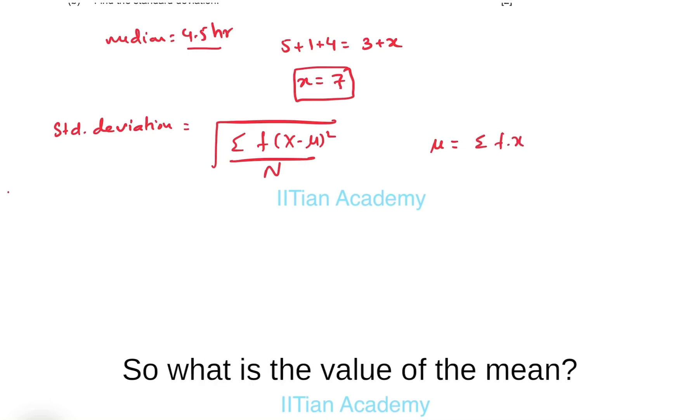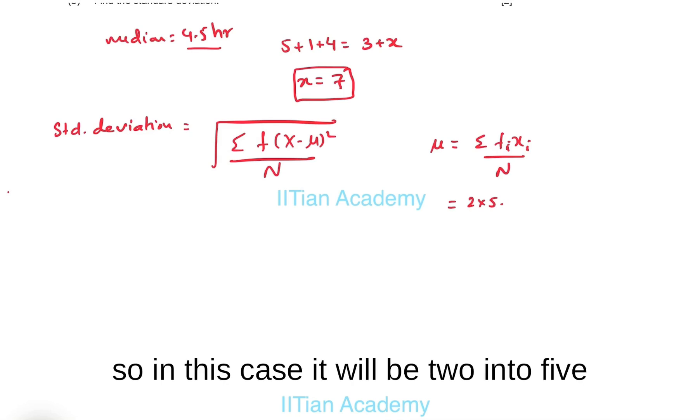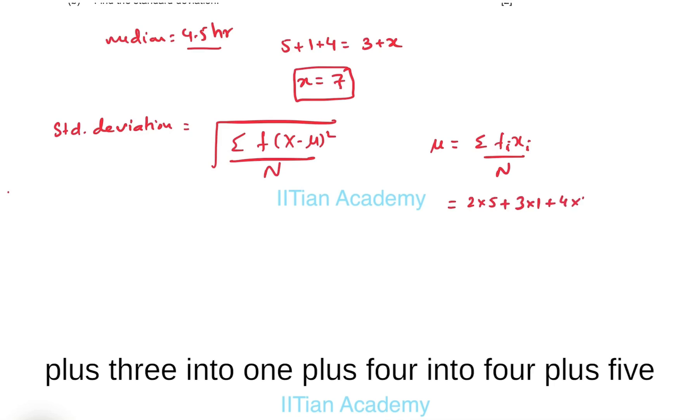The value of mean is summation of fx divided by n, so in this case it will be two into five plus three into one plus four into four plus five into three...